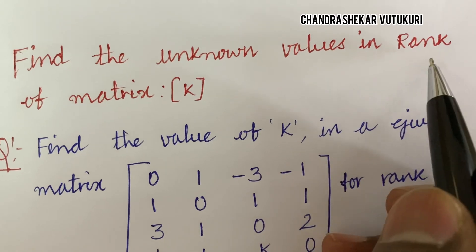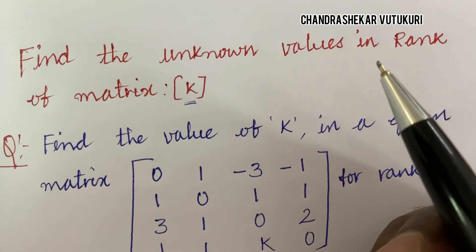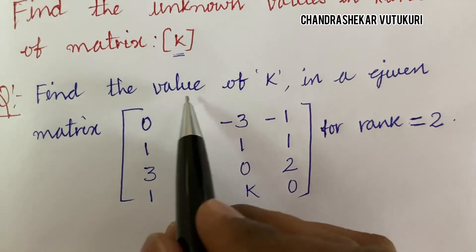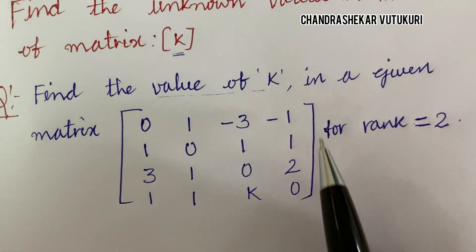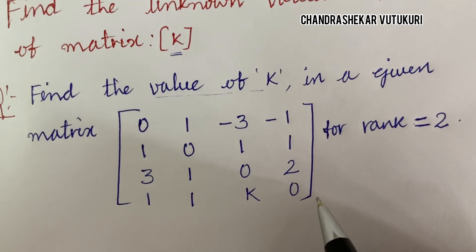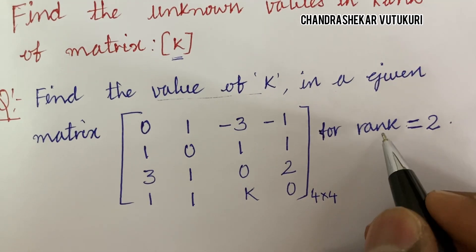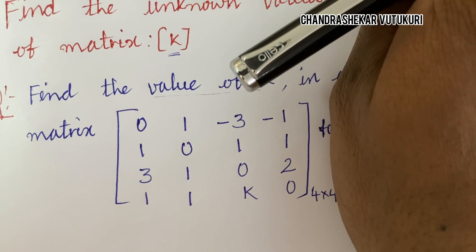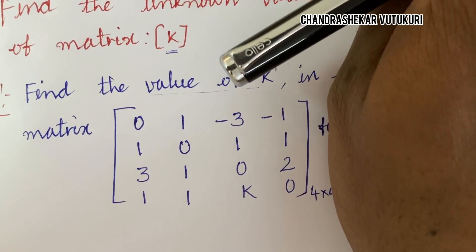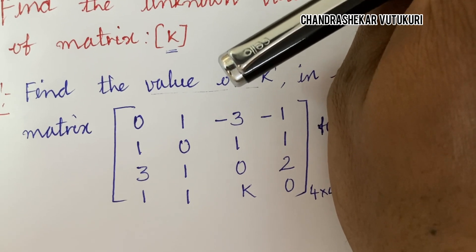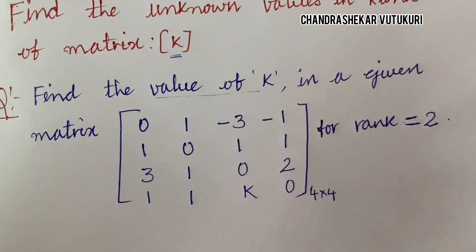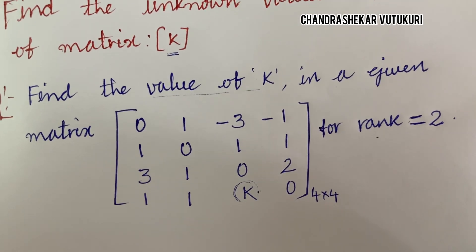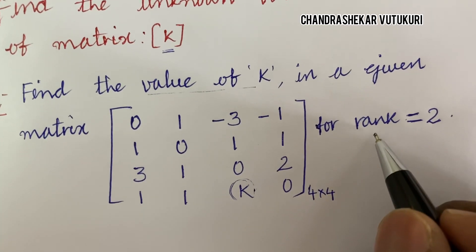The question is: find the unknown value in a matrix, where K is given. This type of question is very likely to appear in the question paper — find the value of K in a given matrix. The matrix is of size 4×4, and the rank is given as 2. You need to work out the value of K in the given matrix.